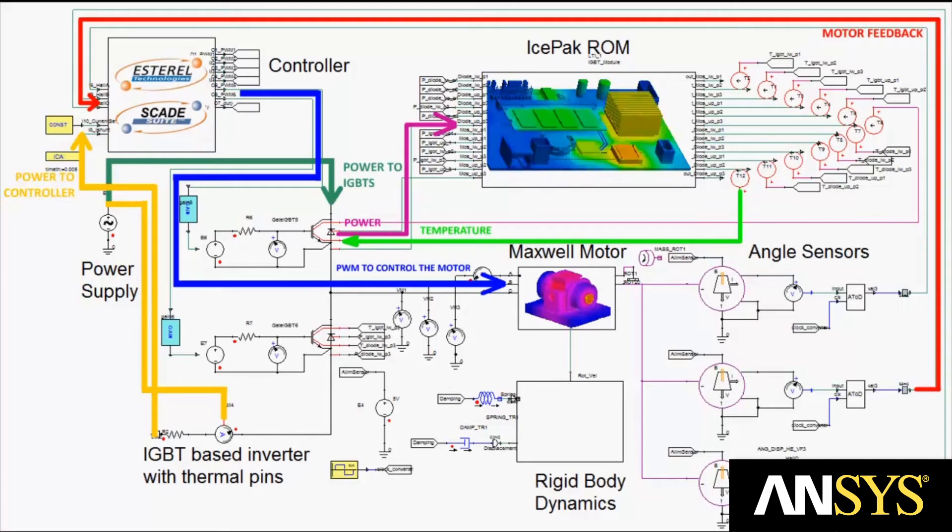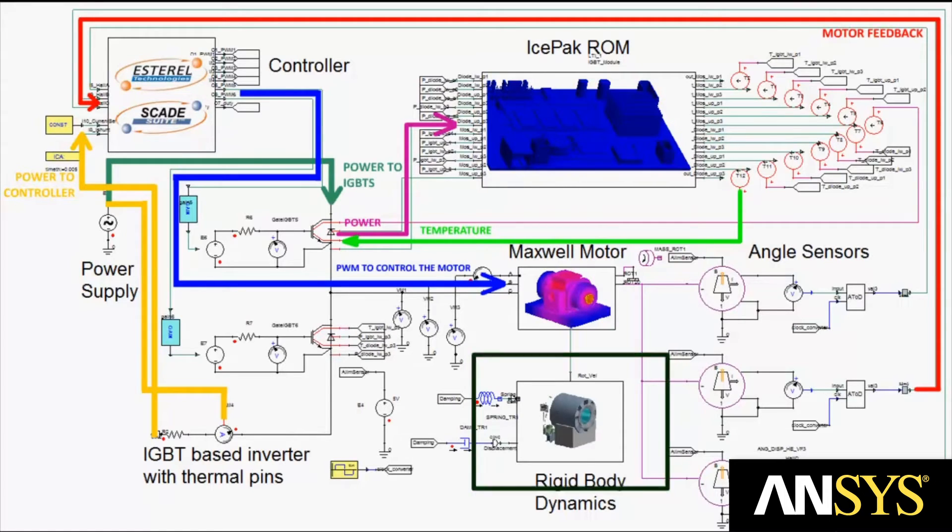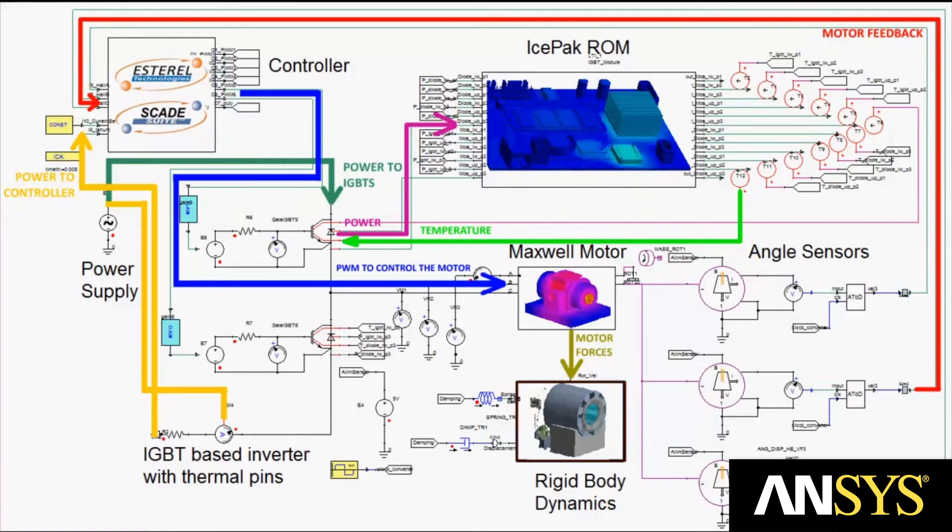The electric drive controls the speed of the motor, so motor position and speed is fed back to the controller for full closed-loop control. As we have seen, the dynamics of the motor depend upon the power supply, the controller, the temperature-dependent IGBT semiconductors, and the 3D physics of the motor itself.